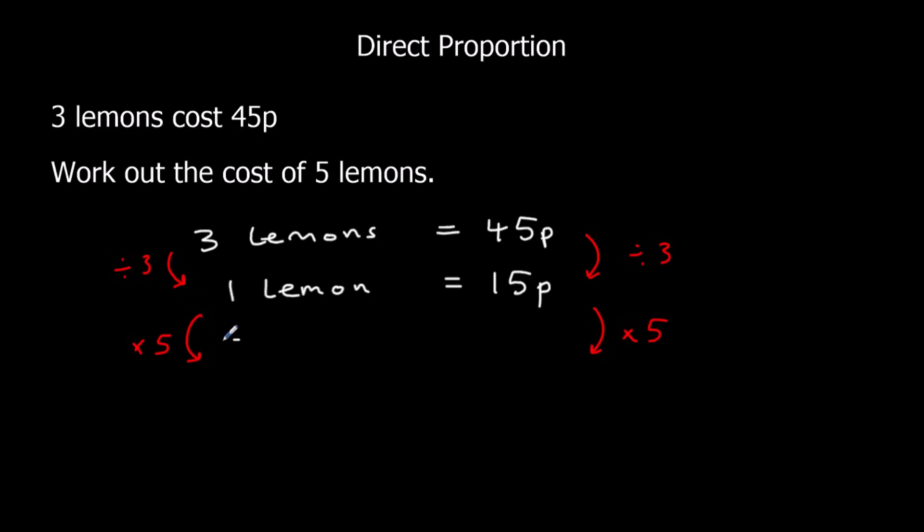So I'm going to say 5 lemons. 15p times 5, that's 75p. So my answer is 75p.